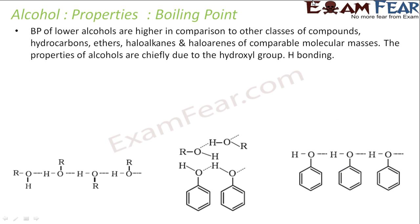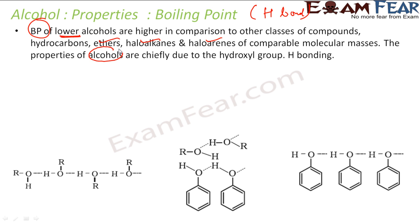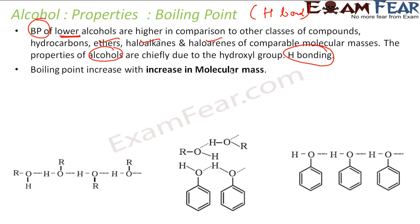If we talk about the boiling point of alcohol, there is one factor playing a critical role — that is hydrogen bonding. That's why the boiling point of lower alcohols, when you compare with other hydrocarbons of similar molecular mass — for example, ethers and haloalkenes — alcohols have a higher boiling point, mainly because of hydrogen bonding.